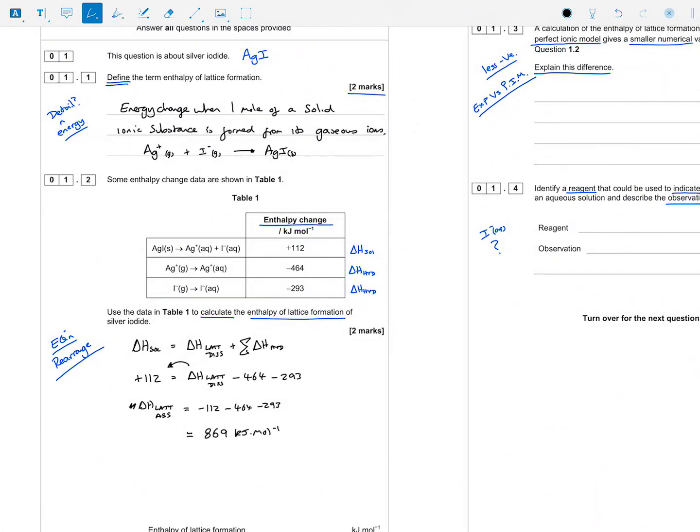You could just move the numbers over to the left-hand side and find lattice dissociation, which would be a positive number, but this needs to be a negative number. So that's my answer there. It's got to be negative.